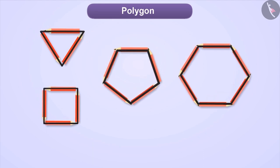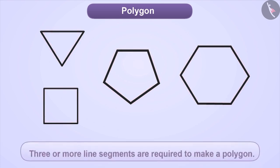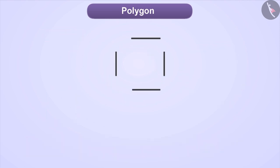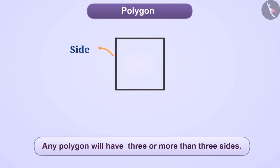In this way, we can say that three or more than three line segments are necessary to draw a polygon. Such line segments which form a polygon are called sides of polygon. Therefore, a polygon has three or more than three sides.